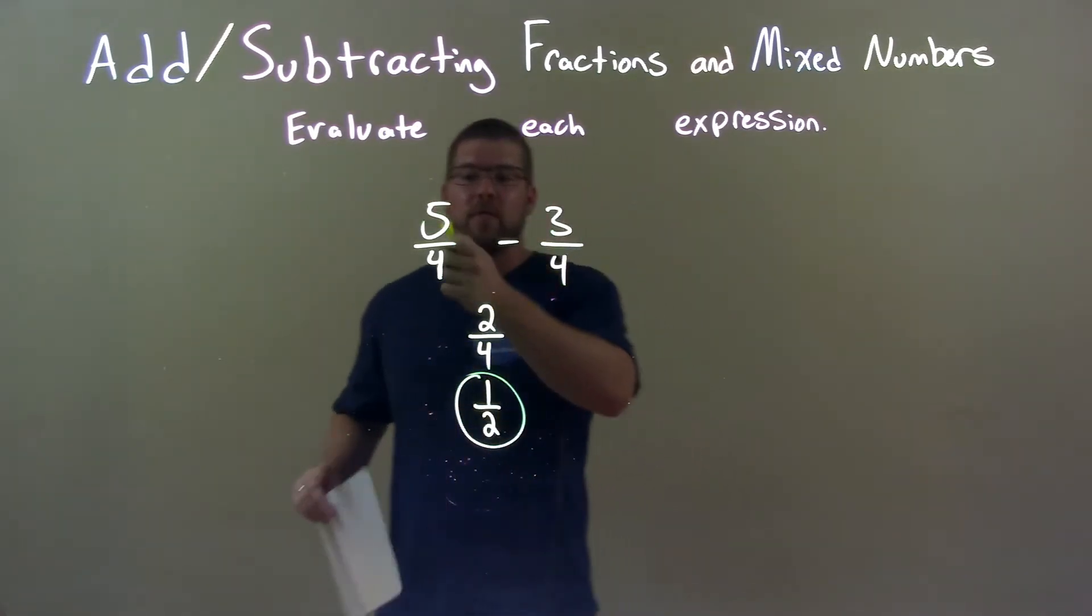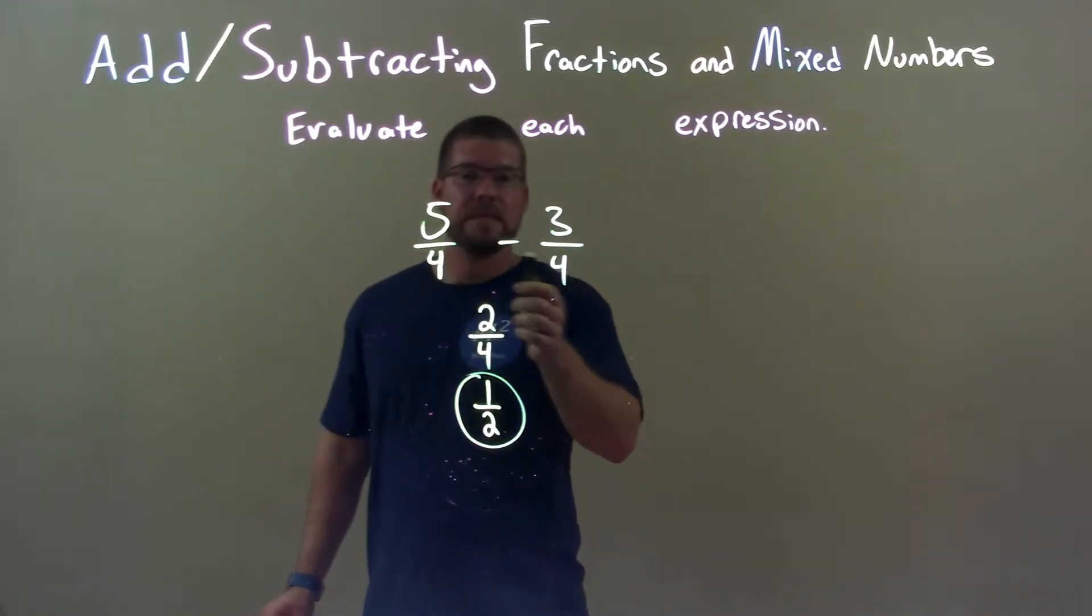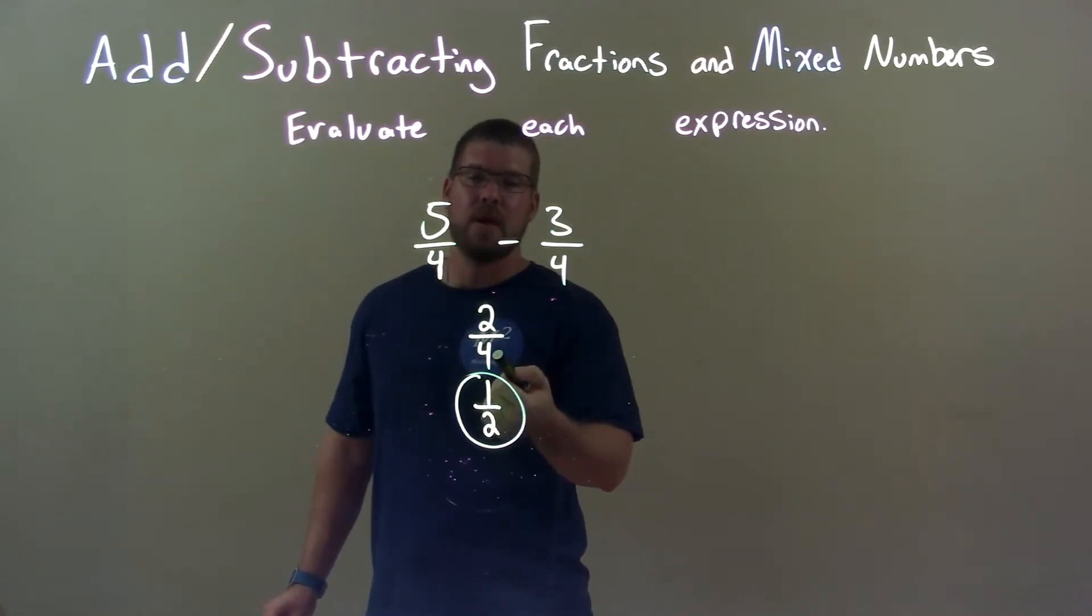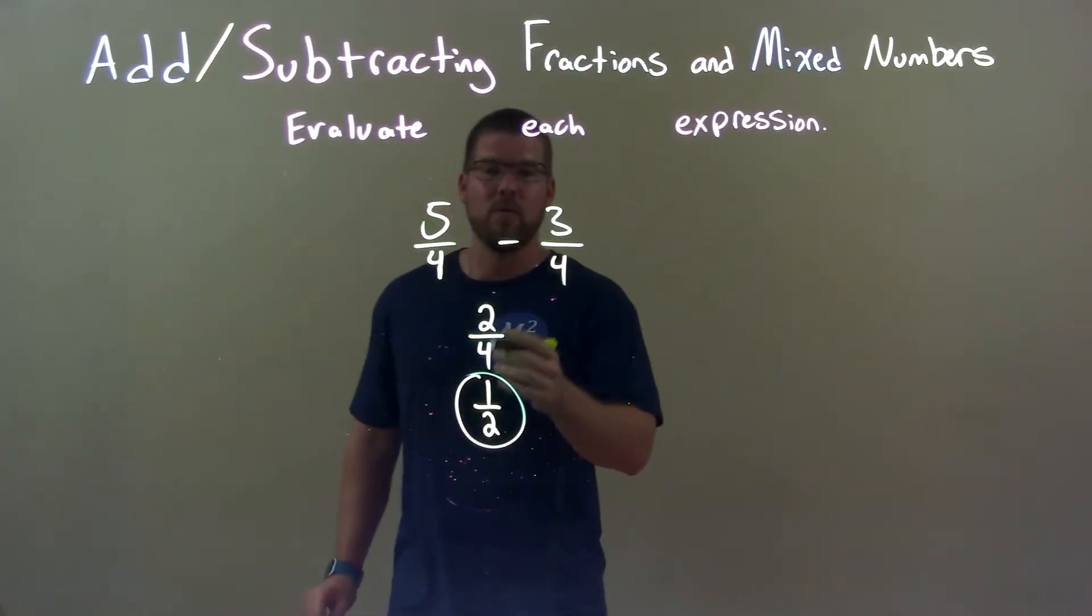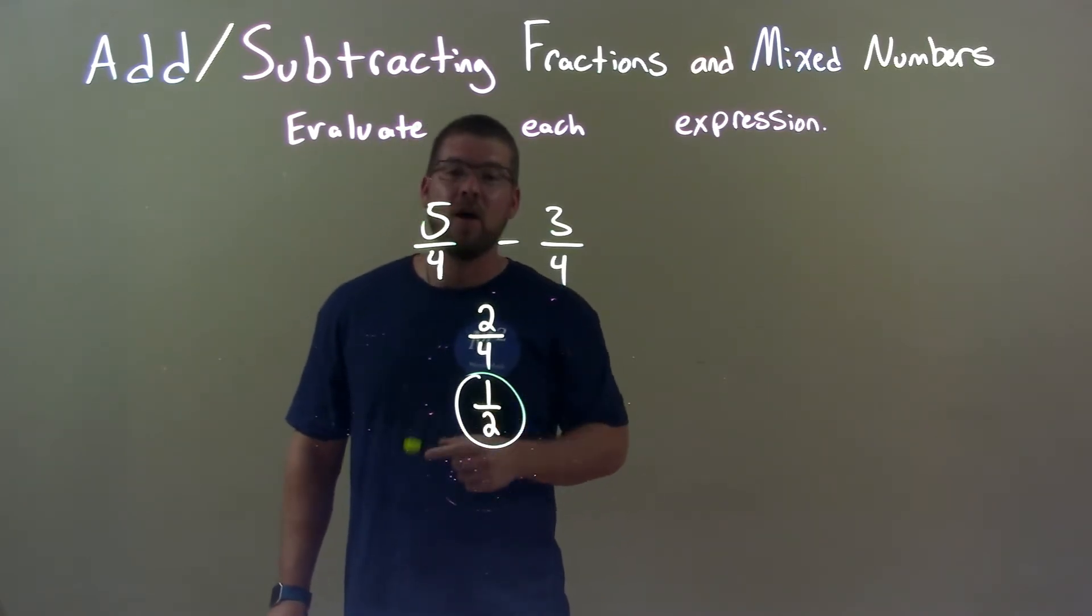So, quick recap: we're given 5 fourths minus 3 fourths. Since these have the same denominator, we just look at the numerator. We subtract the numerator, got a 2, kept the same denominator, 4, then 2 over 4 simplified to be 1 half. So our final answer here is just 1 half.